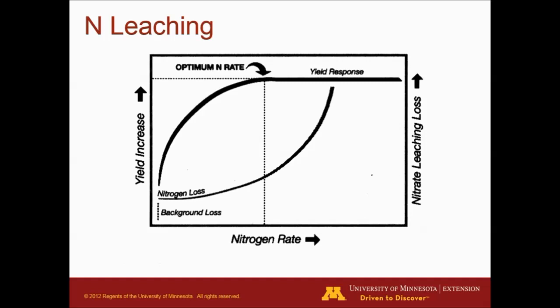Nitrate leaching is one of the key losses for nitrogen management. The idea in crop production is that we want to apply nitrogen rates that will produce high yields, but we don't want to over-apply nitrogen. Here's an example showing how if we increase nitrogen rates, we're going to increase our yields to a point. But if we keep increasing the nitrogen applied to that crop, we're not going to have any yield response — the yield response becomes flat. However, losses to the environment increase dramatically beyond that optimum.